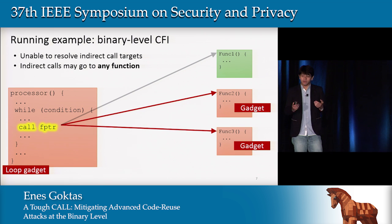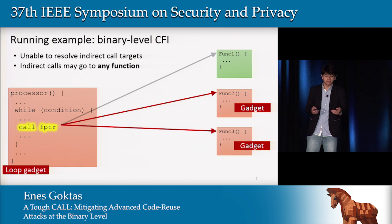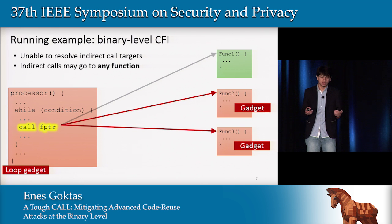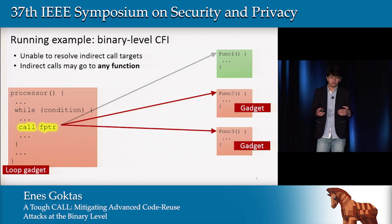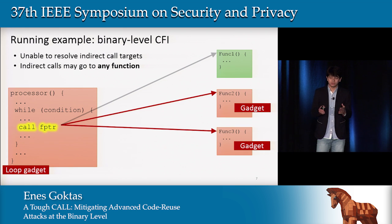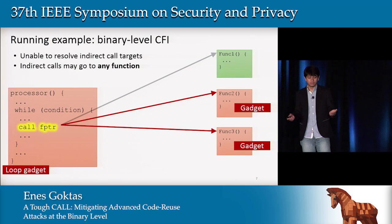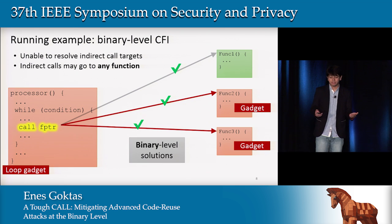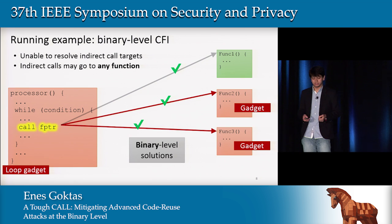However, binary-level CFI solutions are unable to resolve the exact targets of an indirect call. So they do raise the bar for attackers — the indirect call cannot go anywhere in the program — but ultimately it can go to all functions, and this allows attackers to still perform advanced code reuse attacks.